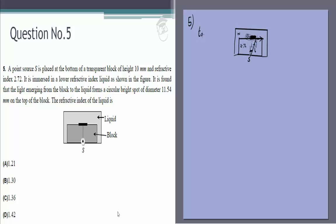And if this angle is i, what is tan i? 11.54 by 2, this is the radius divided by this distance the height which is given to be 10 millimeters.